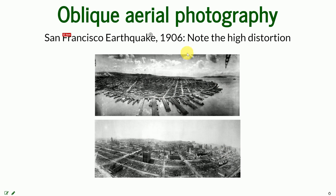The first aerial imagery is from 1906, from the San Francisco earthquake. Note the high distortion, especially on the edges. The blocks here are supposed to be rectangular, but they appear this irregular shape. Here you can see how tilted everything appears to be in the picture.